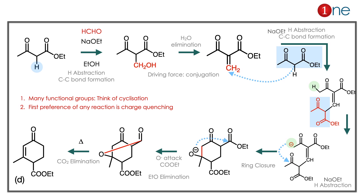Key learnings from question 5: First, you have to master identifying the reaction center. With many functional groups and many reaction centers, always think of active groups — here, the active methylene hydrogen. Second, if you have many functional groups, think of cyclization. Many functional groups lead to the cyclized product.